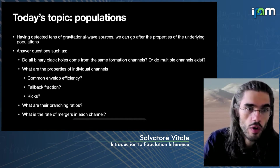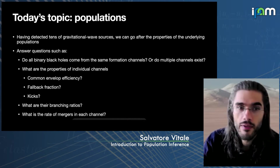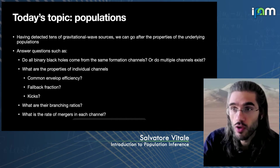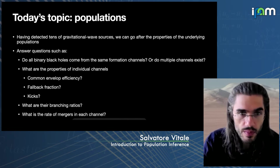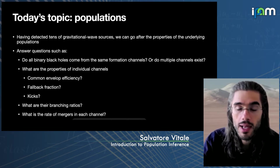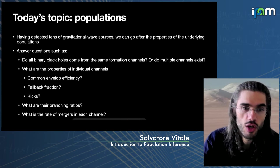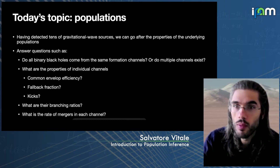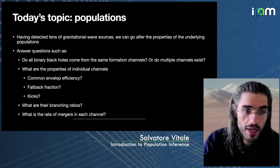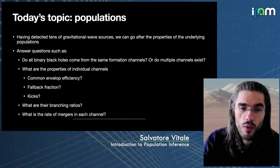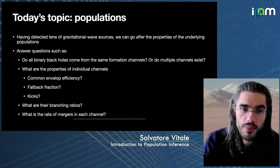For example, do all the binary black holes that we have detected so far, and that we can detect in the near future, come from the same astrophysical formation channels, or do we need to think about multiple formation channels to explain the data? Regardless of how many such formation channels exist, how well can we characterize them? Can we, for example, measure the efficiency of astrophysical parameters such as common envelope efficiency for binaries forming in galactic fields, or fallback fraction when the star goes supernovae, or the kicks during the supernovae explosion? These are the astrophysical questions about the formation of binaries and the progenitor stars that we can try to address with the population of binaries.